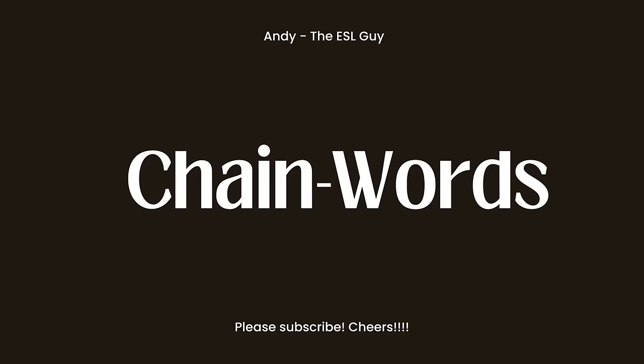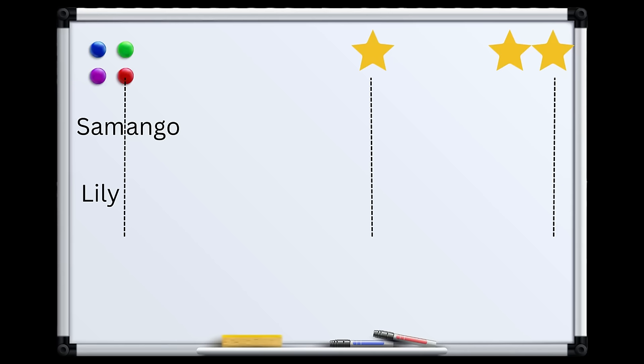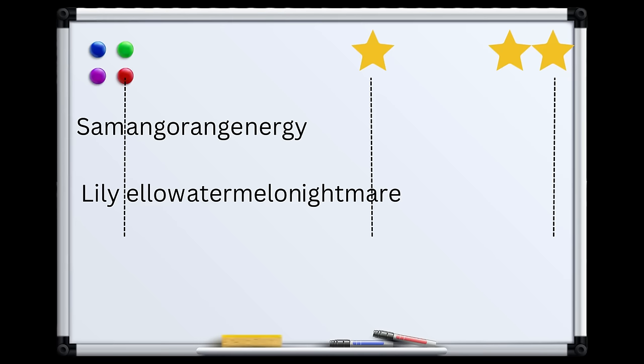Game five is called Chain Words. Once again, separate the class into two teams, and I like to use a well-behaved student's name as the first word. So here we have Team Sam and Team Lily. The students have to spell a word correctly, starting with the last letter of the previous word. This is a good time to tell them that longer words are better.